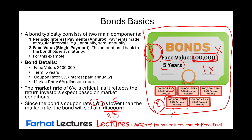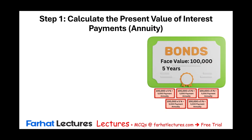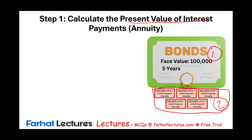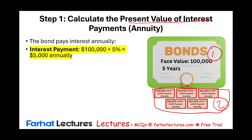Let's compute the price of the bond. Step one: we compute the present value of the interest payments. Remember, the bond consists of two parts — the principal and the annuity. We're going to start by discounting the annuity. The bond pays interest annually. The interest payment is the face value times the interest rate, which is $5,000. This bond is for five years, so on a timeline we have five periods.